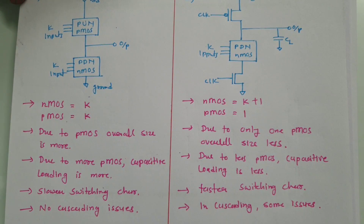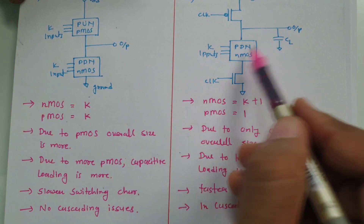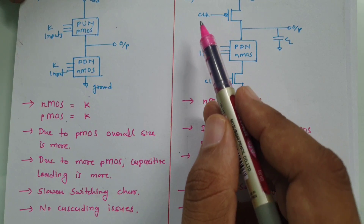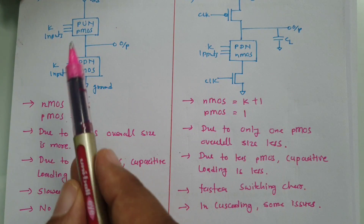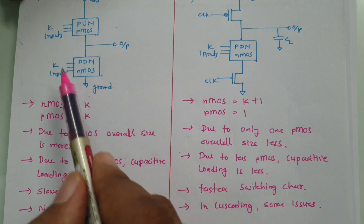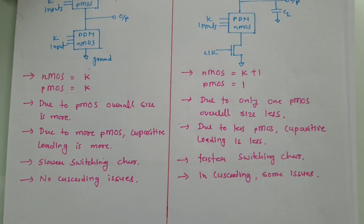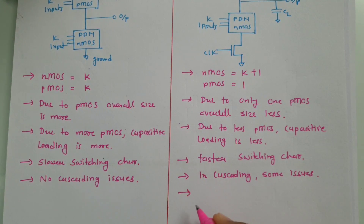When we look at the operation of dynamic CMOS, it is compulsory to have a pre-charge phase driven by the gated clock, while pre-charge is not required in static CMOS. So in dynamic CMOS we need pre-charge for operation, and in static CMOS we do not.